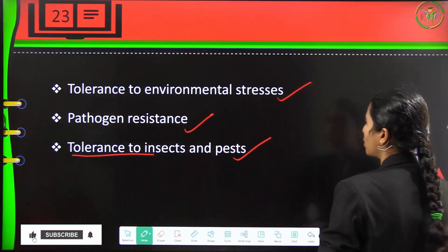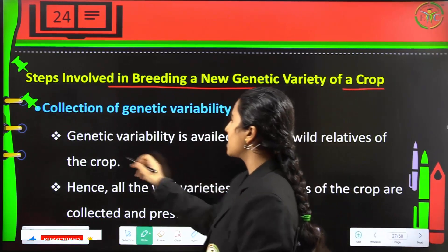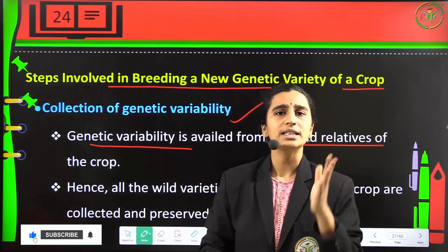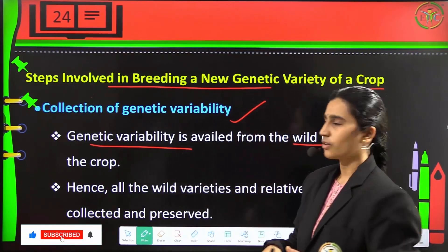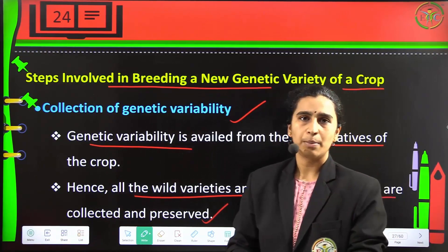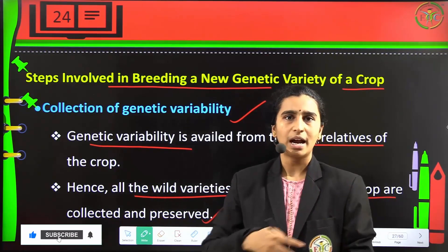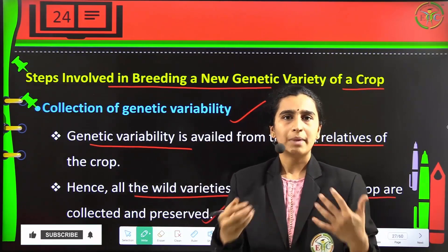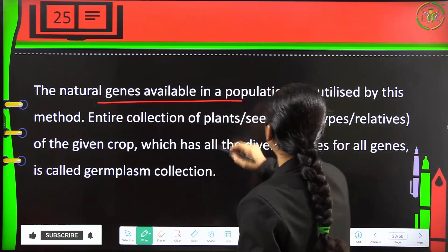The first step in breeding a new genetic variety is collection of genetic variability. Genetic variability is available from the wild relatives of the crop. We manipulate genes to get a new yield of the crop, so all wild varieties and relatives are collected and preserved. For example, with wheat, the wild breed is collected, nearby species are preserved, their characteristics are genetically matched, and then they are bred to obtain a plant with high nutritional value.